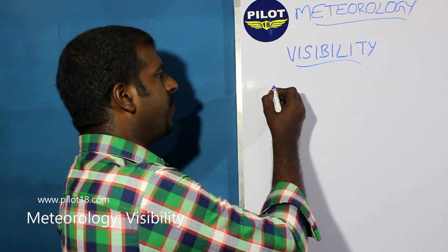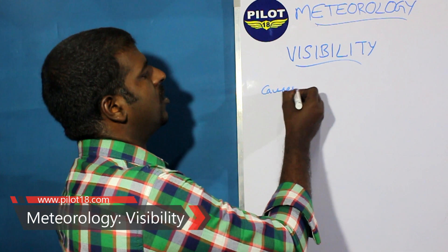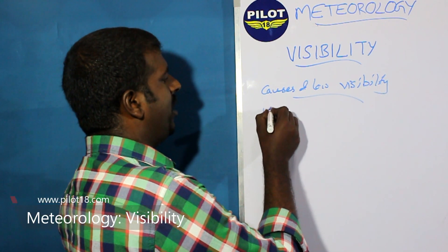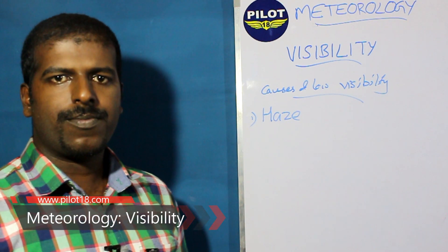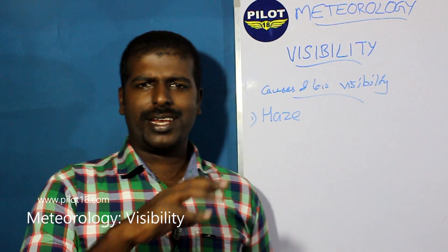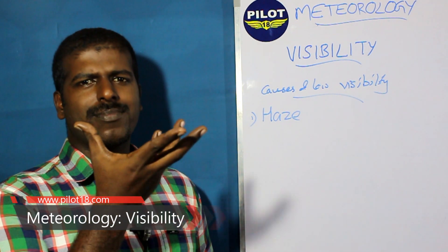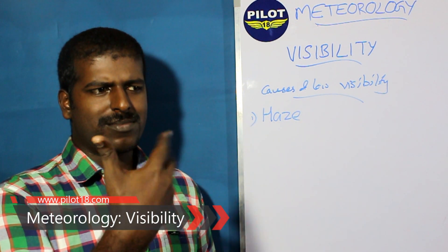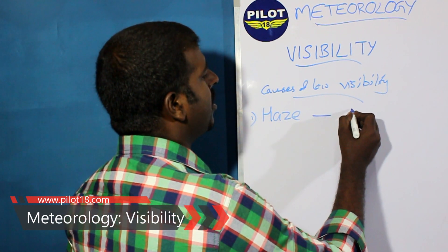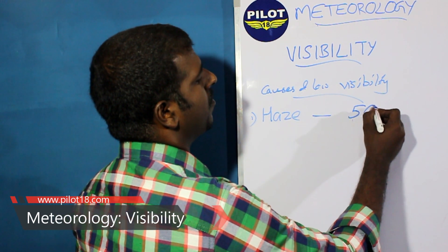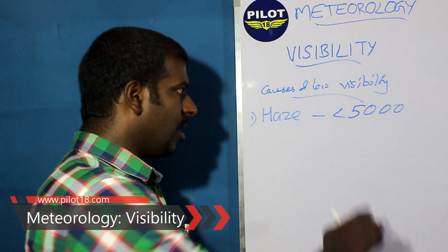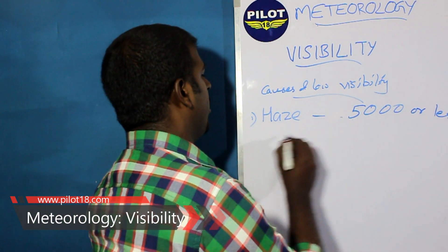What are the causes of low visibility? First is haze. Haze is a milky appearance of the atmosphere — a translucent layer that can be a mixture of dust particles, smoke, and other particles. In haze, visibility is usually less than 5000 meters.